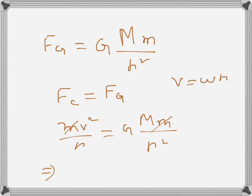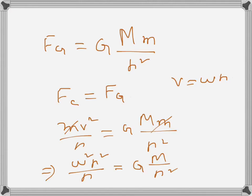So we can write here ω² r² over r and then G M over r², which gives us here ω² r. This r will get cancelled, there will be only one r.